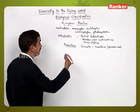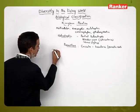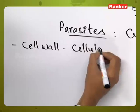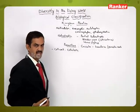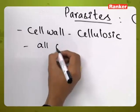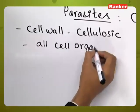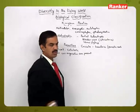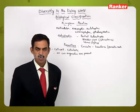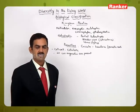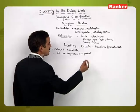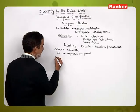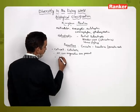This type of plant is also kept under Plantae. If you see the characteristic features exhibited by the Plantae group, they have a cell wall made up of cellulose. A cellulosic cell wall is present and all cell organelles are present, including mitochondria, chloroplast, endoplasmic reticulum, Golgi complex, and 80S type of ribosomes.